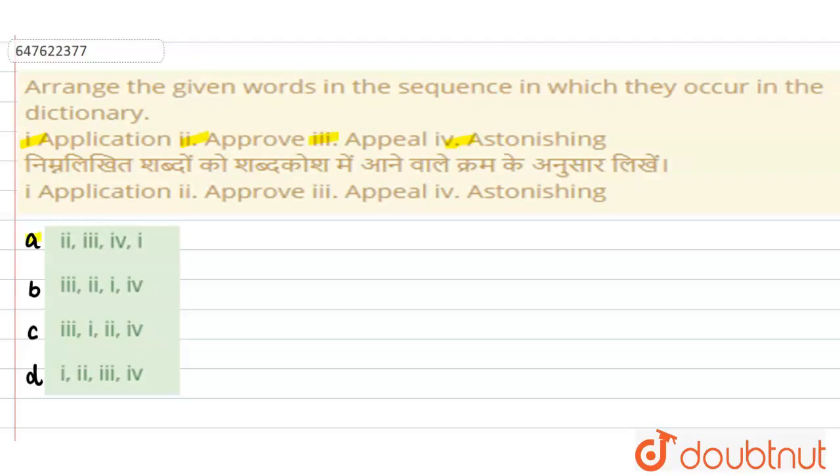We have four options A, B, C and D. Dekhiye, jo words diye gaye hai - application, approve, appeal and astonishing. Isay humay ek series me, dictionary order me arrange karna hai.